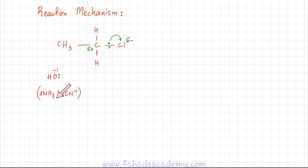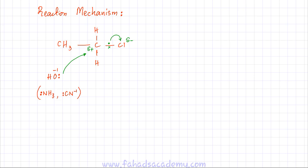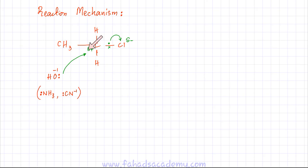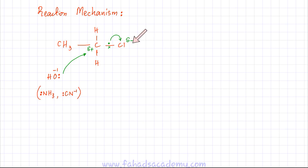These two nucleophiles — OH⁻ and CN⁻ — have exactly the same mechanism. The OH⁻ nucleophile has lone pairs on oxygen. The electrons on oxygen are going to be attracted to this positive charge, so the hydroxide ion would be attracted to this positive carbon and it's going to bring its electrons closer to this carbon, trying to bond with it. As these lone pairs get attracted to this positive carbon atom, the lone pairs in the C–Cl bond are going to get repelled.